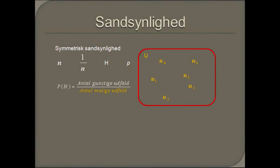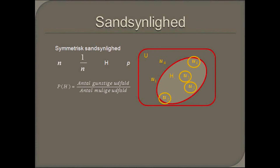Lad os kigge på et eksempel. Vi har her fire gunstige udfald ud af seks mulige udfald. Sandsynligheden for at hændelsen indtræffer er altså lig med to tredjedele, eller knap 70%.